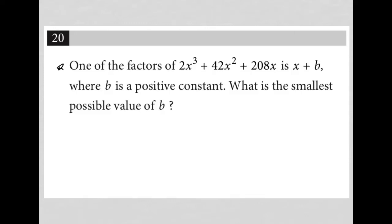This question says one of the factors of 2x³ + 42x² + 208x is x + b, this binomial, where b is a positive constant. What is the smallest possible value of b?